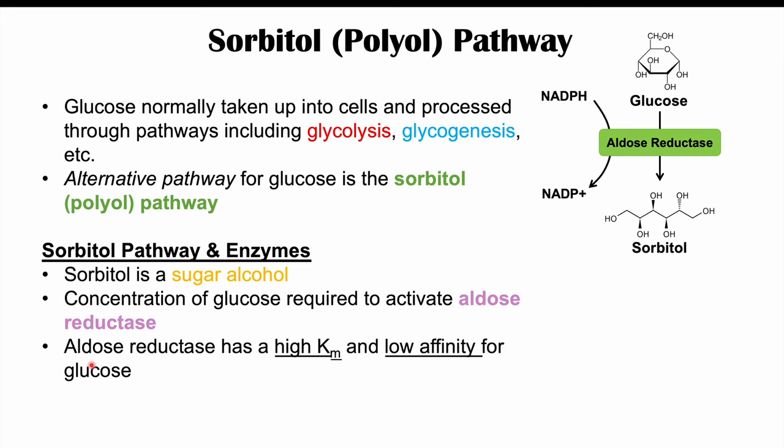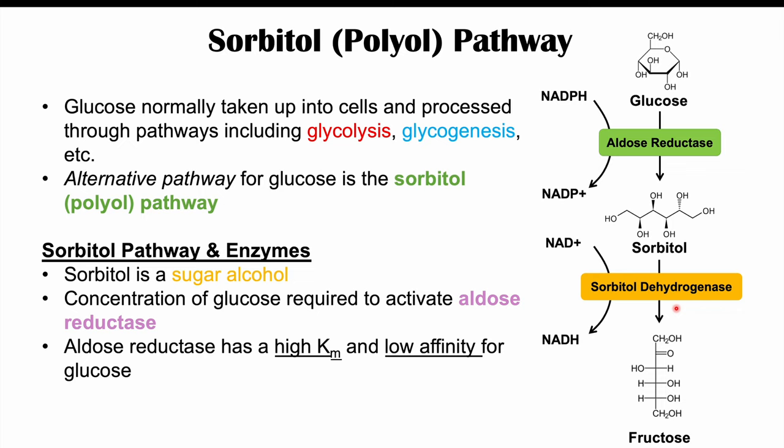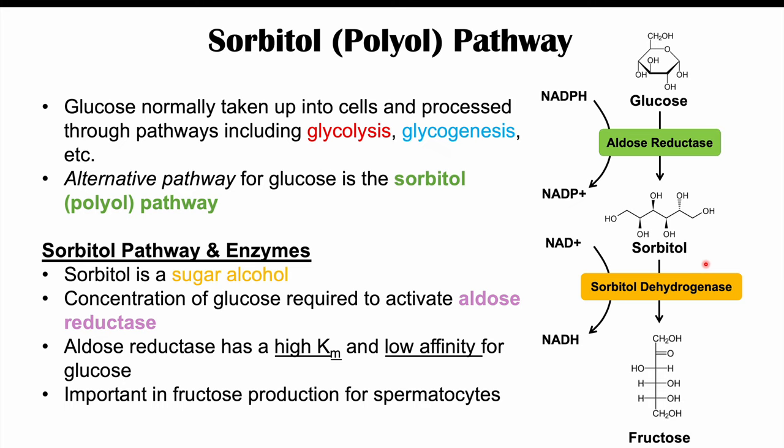Sorbitol then undergoes another enzymatic reaction with sorbitol dehydrogenase, which reduces NAD+ to NADH and forms fructose. This pathway is important in the liver, ovaries, and seminal vesicles of the testes, where it contributes to spermatocyte production. Sperm also use fructose as an energy source.